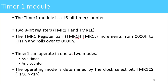Timer1 can operate in one of two modes: as a timer or as a counter. When Timer1 operates as a timer, we give the internal CPU clock as input. When operating as a counter, we give an external clock signal as input. The operating mode is determined by the clock select bit TMR1CS, which is present in the SFR T1CON (Timer1 Control), specifically bit number 1.